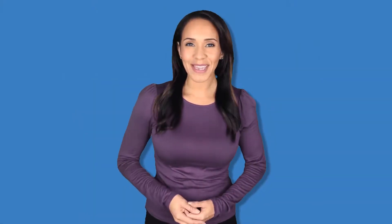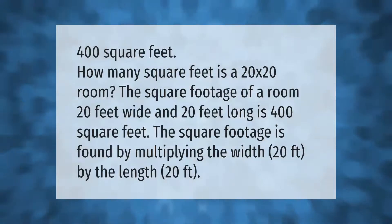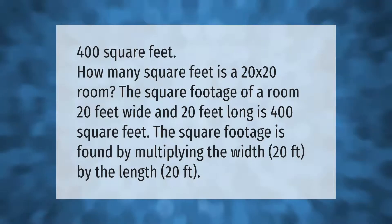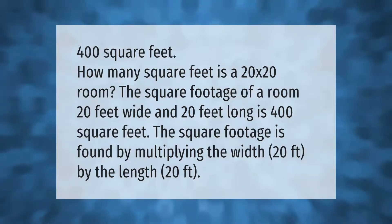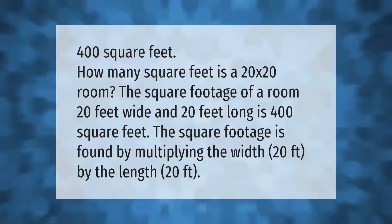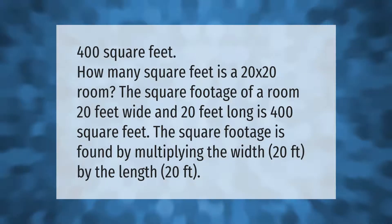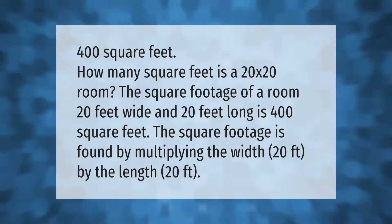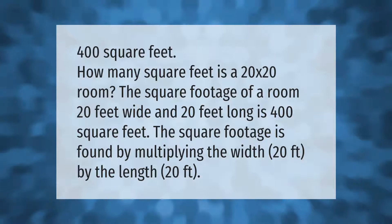How many square feet is a 20 by 20 room? The square footage of a room 20 feet wide and 20 feet long is 400 square feet. The square footage is found by multiplying the width, 20 feet, by the length, 20 feet.